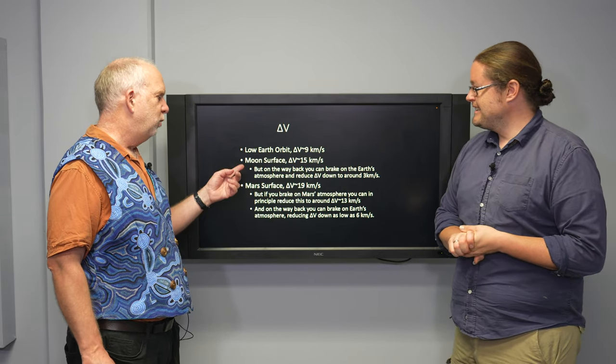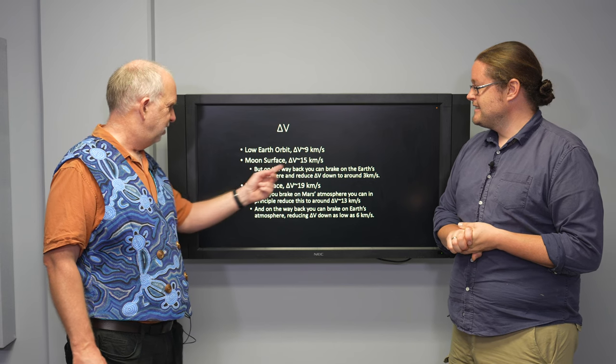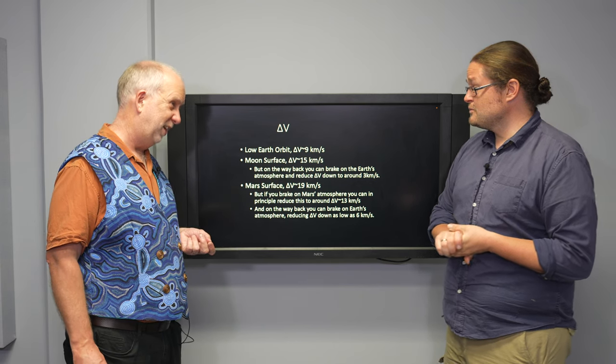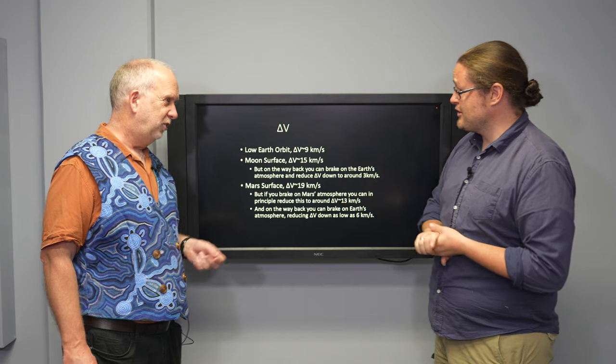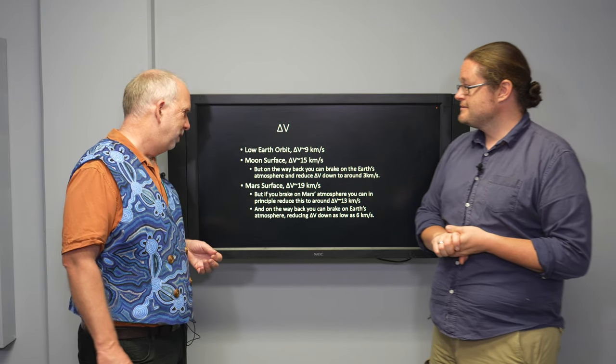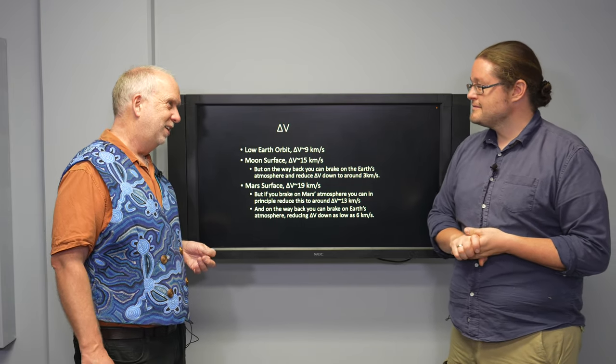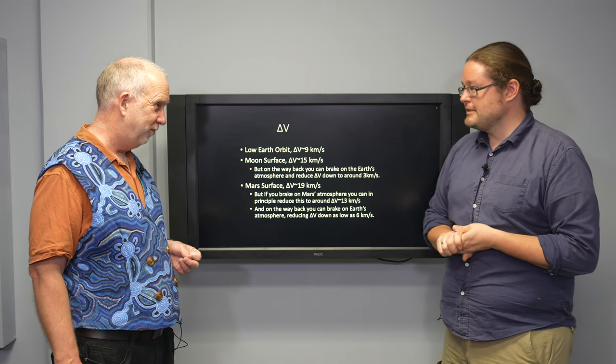Now to get to the Moon surface all the way from the Earth's surface you need a Delta V of about 15 kilometers per second. It's quite a bit more than just the low Earth orbit. There's nine to get to low Earth orbit and then another six to get from there to the Moon orbit and then down to the Moon surface.